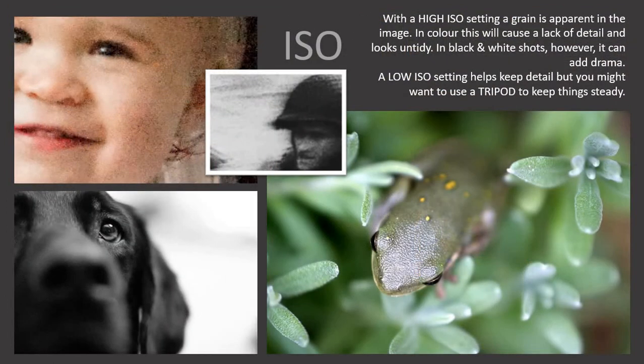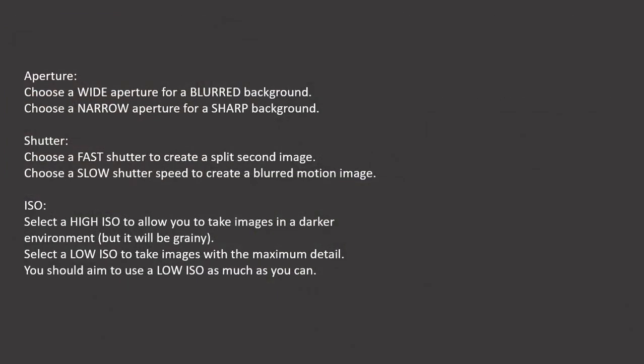ISO: with a high ISO setting grain is apparent and very obvious. This can be quite nice in a black and white image sometimes, but on colour it can be quite obtrusive. A low ISO setting is what you should be aiming for most of the time because that keeps everything sharp. But sometimes you'll find you might need a tripod, same as you would with a slow shutter speed.